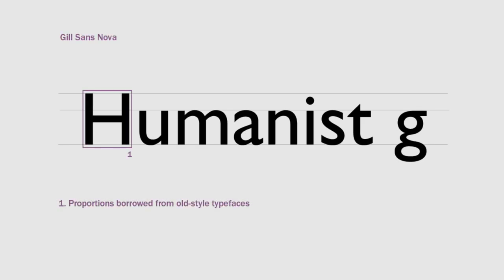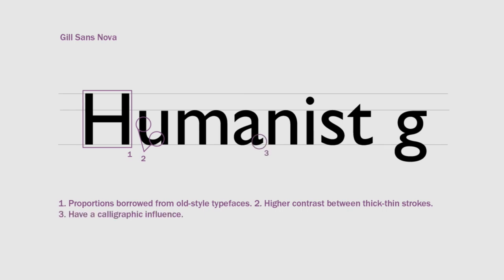The third subcategory is Humanist. Typographers wanted to bring back the calligraphic influence to letter forms, with proportions based on Roman-style. The contrast between thick and thin strokes is more apparent. There is a calligraphic influence on the tail of the lowercase a, and the aperture on letters A and S is wider for improved legibility. The letter g includes the double-story g to mimic the old-style serif. An example of a humanist font is Myriad.